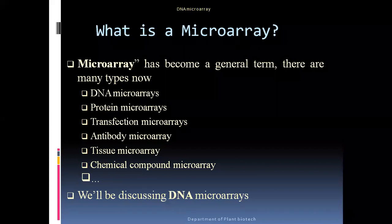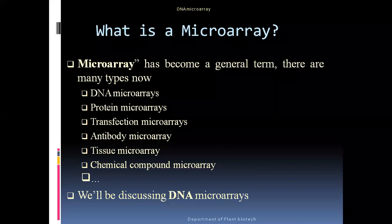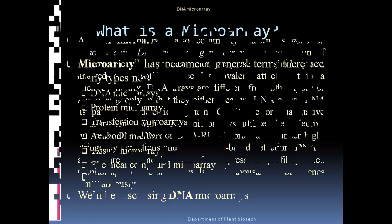Microarrays may be of many types — it may be a DNA microarray, protein microarray, transfection array, or antibody microarray. But the main function of microarray is to detect the sample by using the hybridization method. It is mainly based on the blotting method, that is the Southern blotting method.